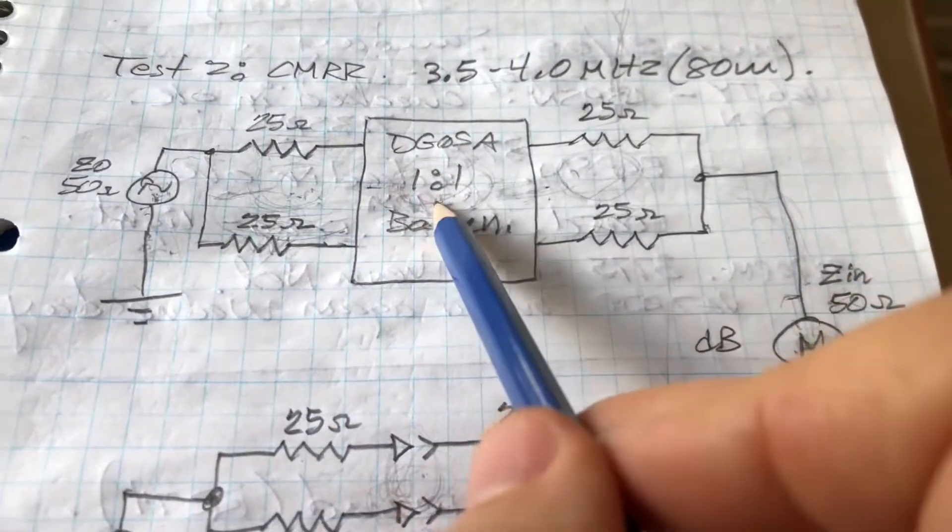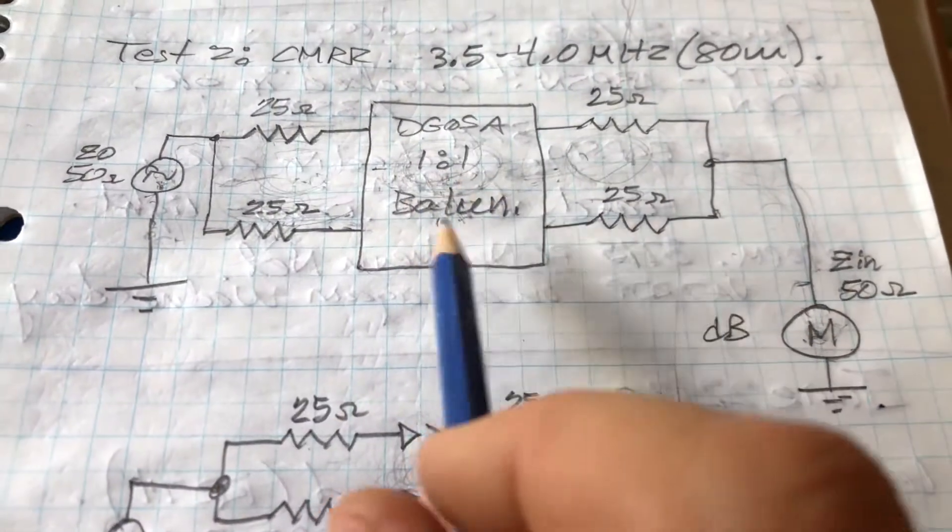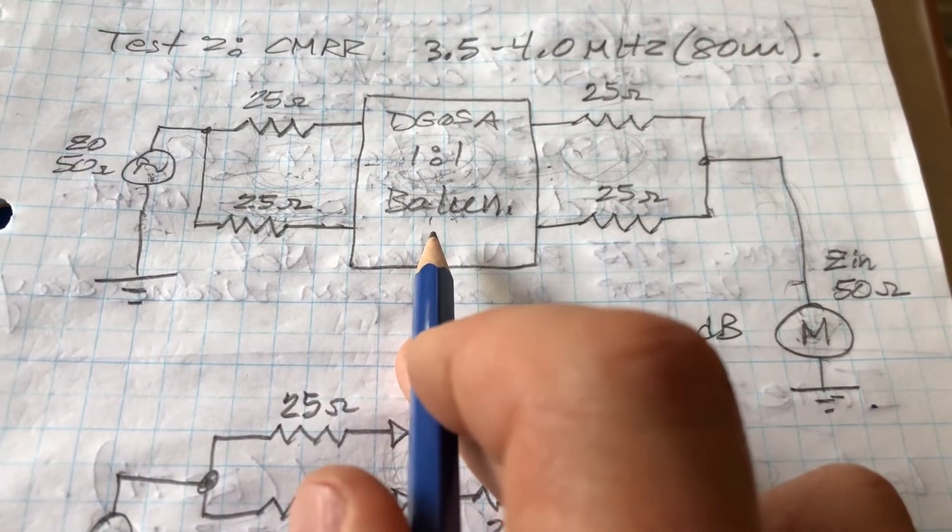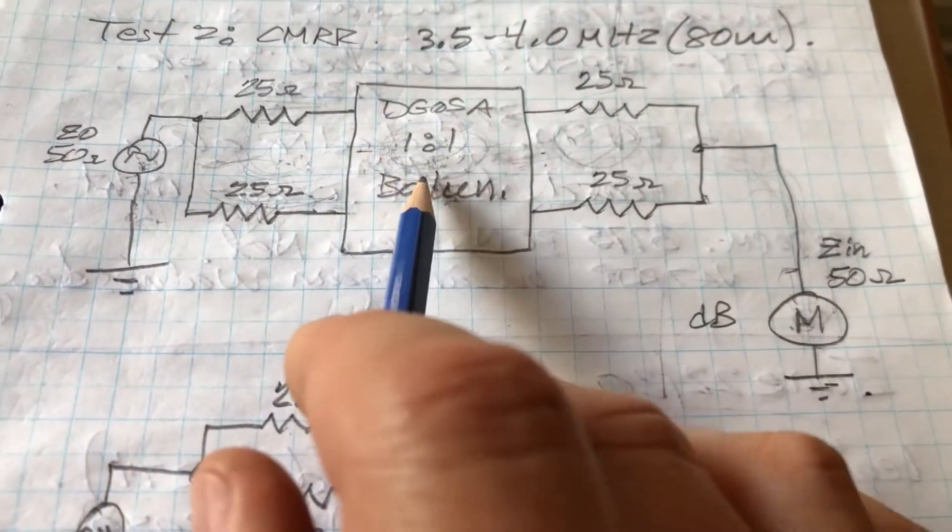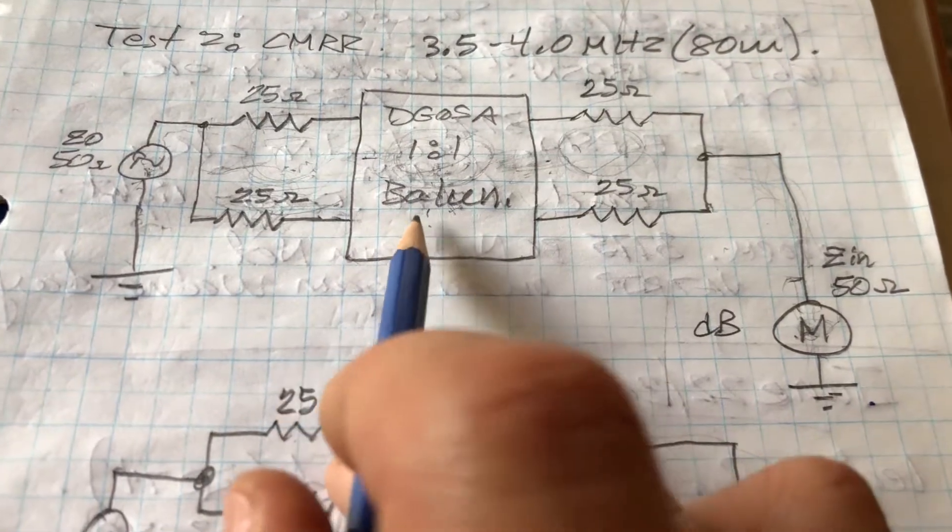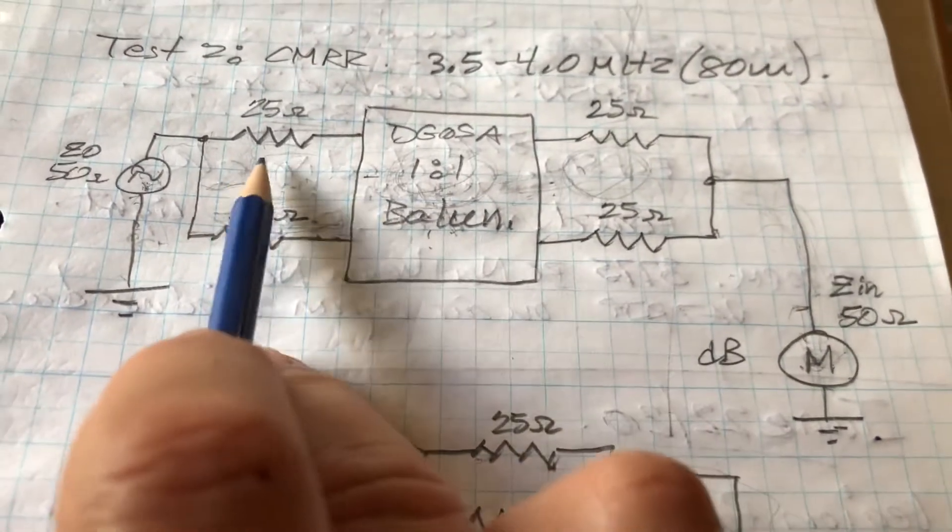So these baluns, as far as I understand from the reading I've done, this particular type can be looked at as a transmission line transformer style of balun. So anyway, I think pretty much any balun or transformer, they're bi-directional unless you build them to not be like in a directional coupler or something like that.